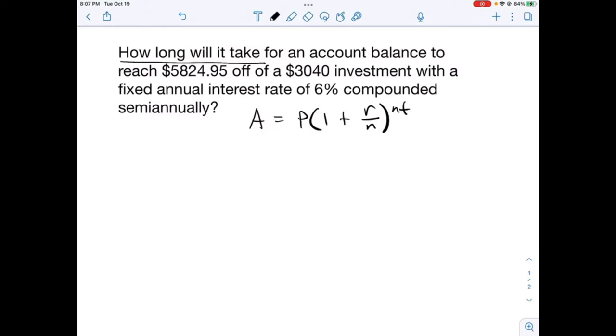I'm going to write out our values. A is our total amount after it has been compounded, so that's $5,824.95.